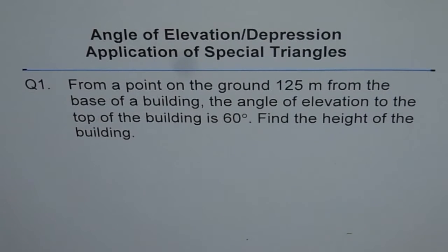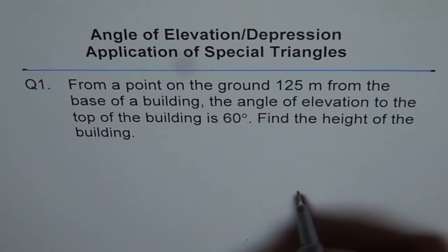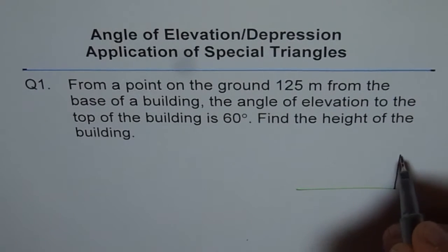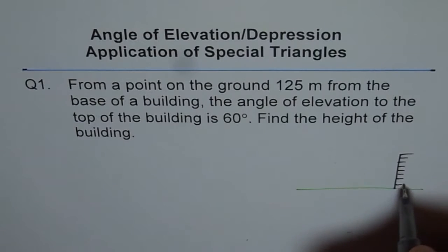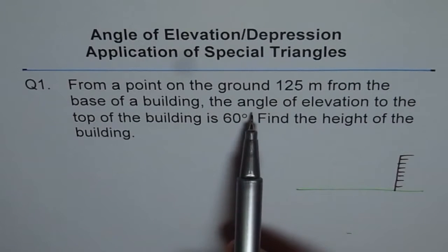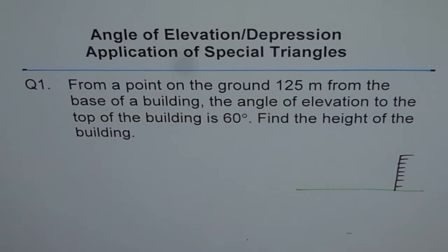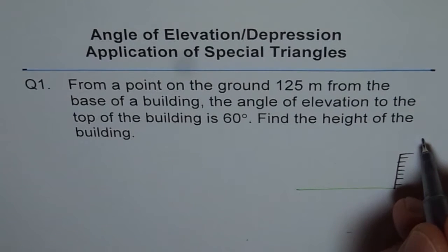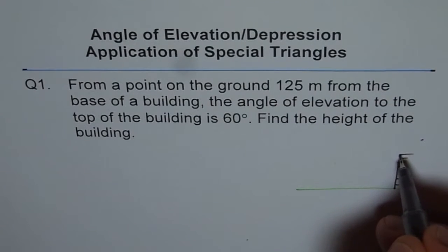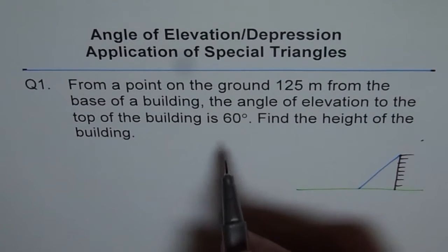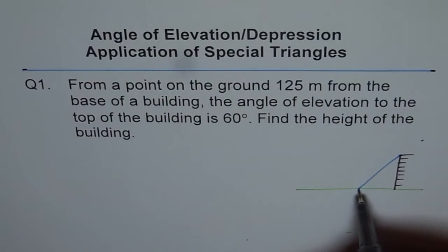Let's get back to the problem. Here's the ground, and here's the building. A point on the ground is 125 meters from the base of the building. The angle of elevation to the top of the building is 60 degrees — let's understand what angle of elevation means.